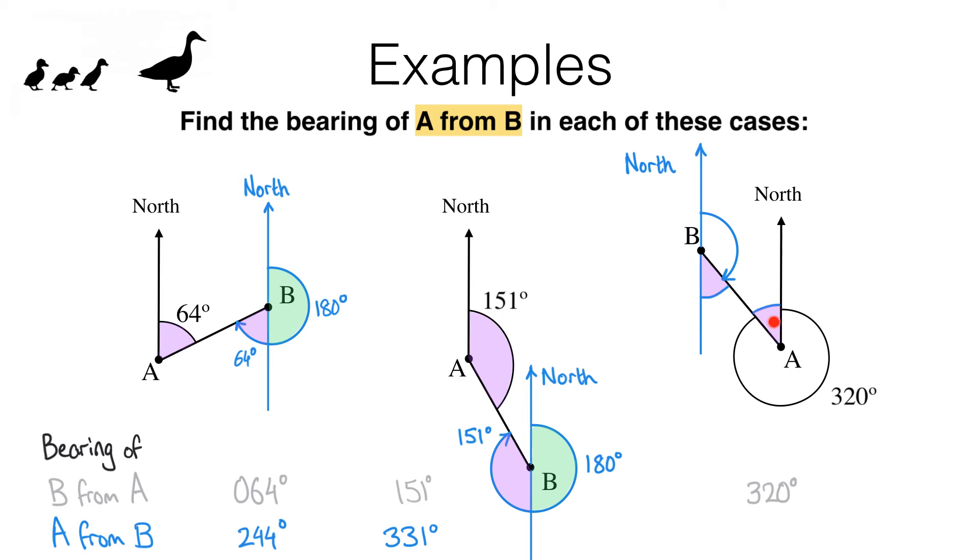Now I can work out the size of this angle because I know that I've got 360 degrees in a full turn. And if this bit here is 320 degrees, then this bit must be 360 minus 320, which is 40 degrees. And because these are alternate angles on parallel lines, then this one is also 40 degrees,